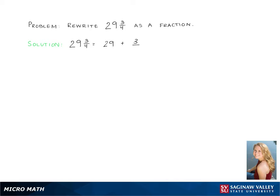And then in order to add these, they need to have the same denominator. Now 29 has an invisible 1 underneath it. So this becomes 29 over 1 plus 3 over 4.